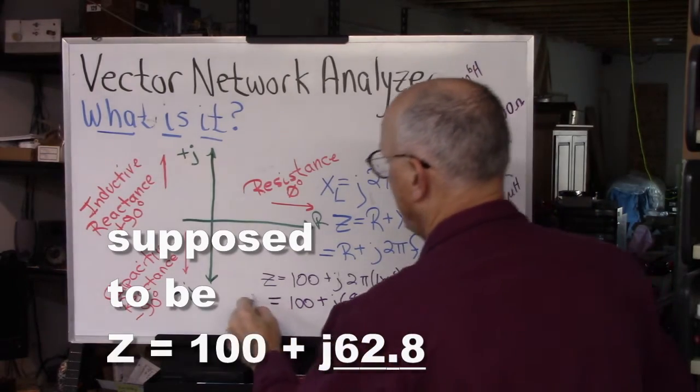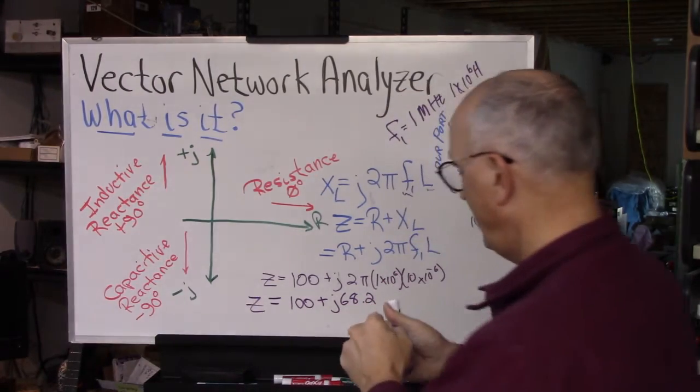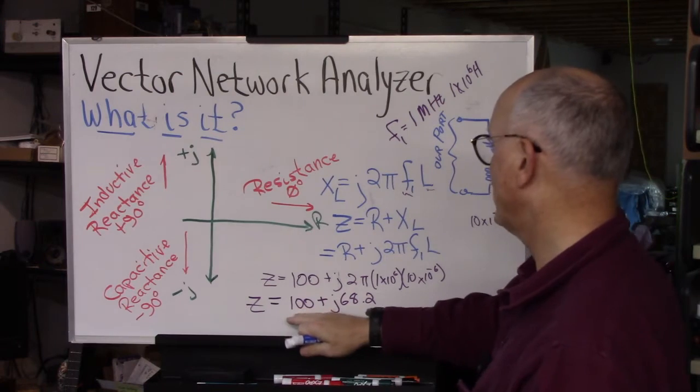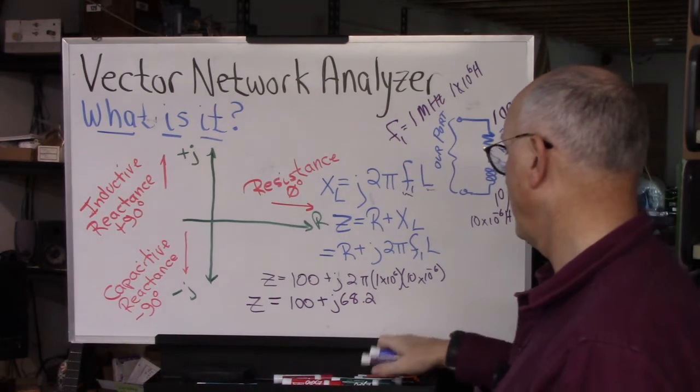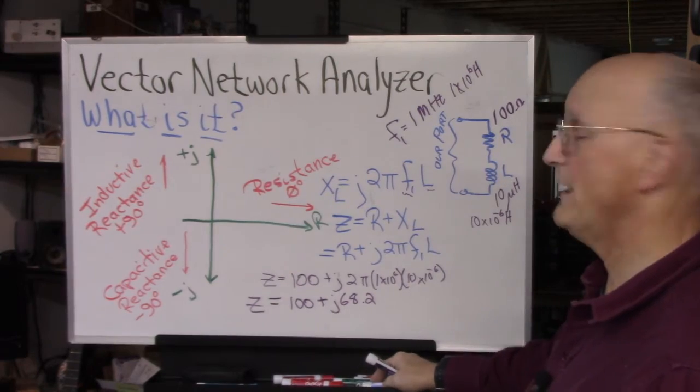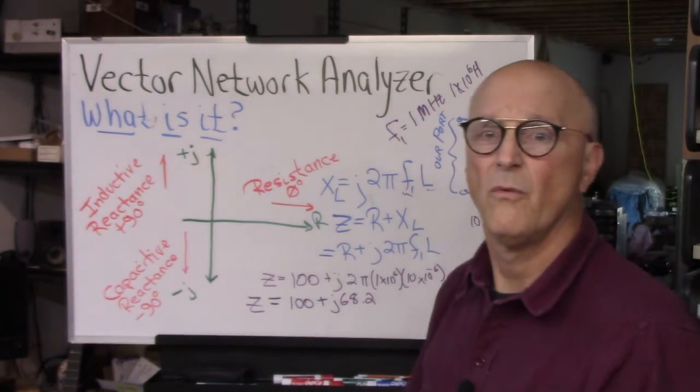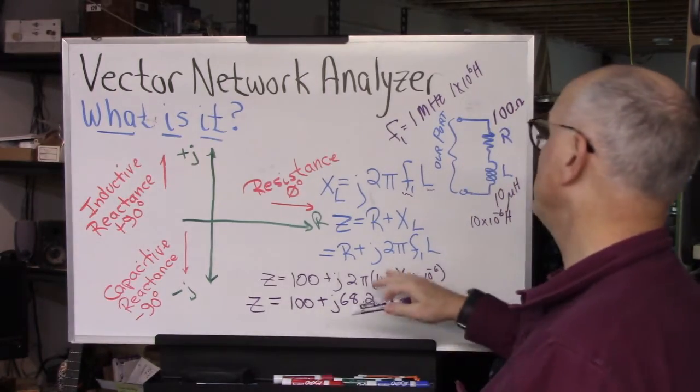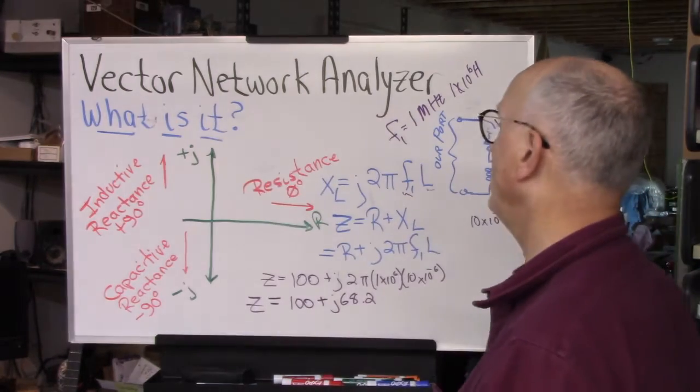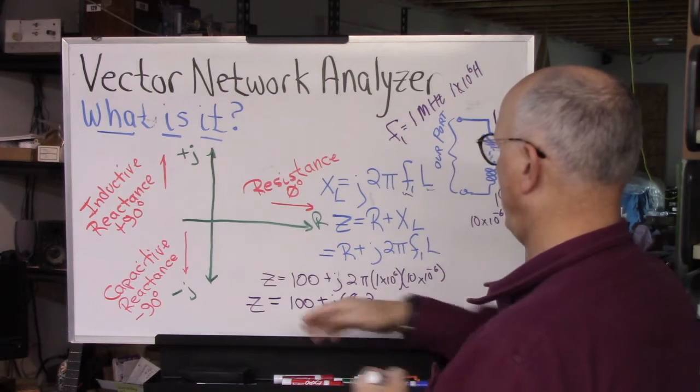And that is the impedance. Notice that this has a real part, and it has an imaginary part. Now what do we do with this real and imaginary part? Well, we're talking about vectors. The impedance is represented by a vector on this plane. So how do we get that vector out of this?